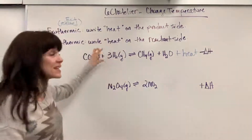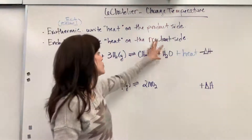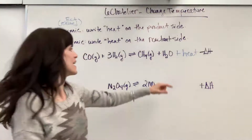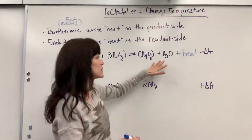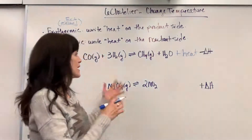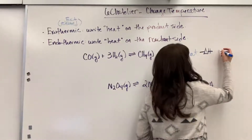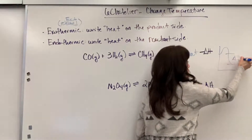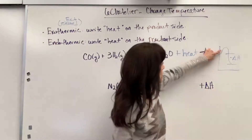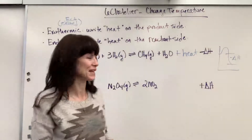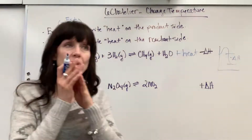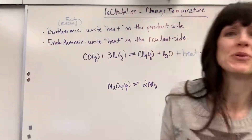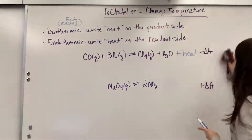You'll remember our activation energy diagram — exothermic. Here's the negative delta H: leftover energy. Here's the energy you put in, and the total energy you get out. That net energy is your negative delta H. So thinking exothermic — exit — write the word heat on the product side. Heat is like a product; it's a net release of energy.